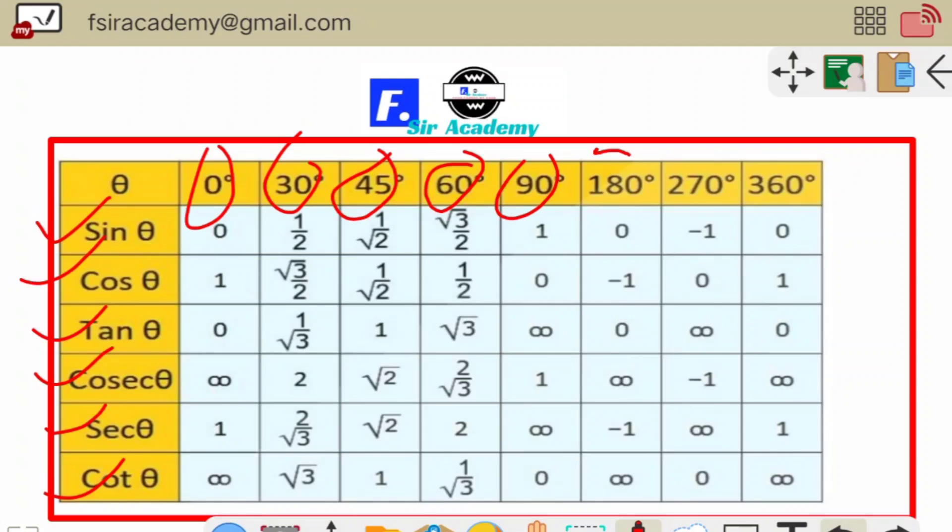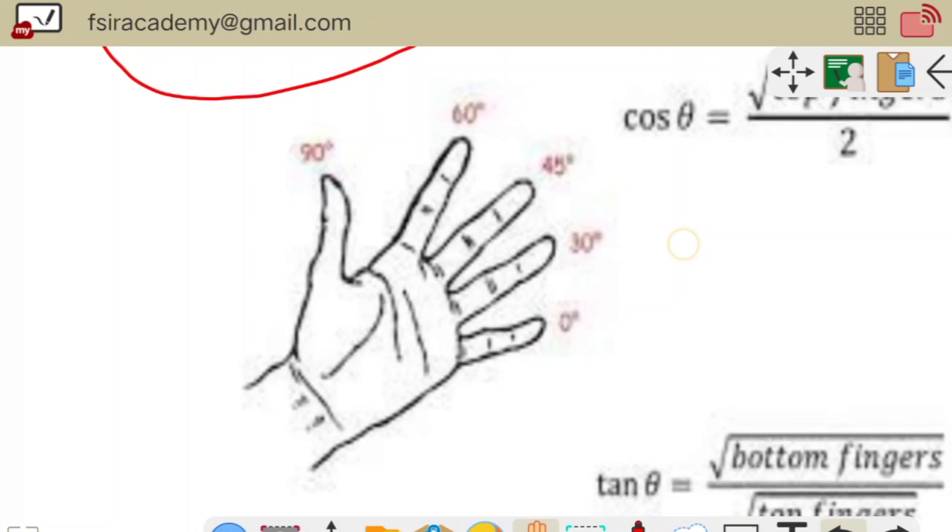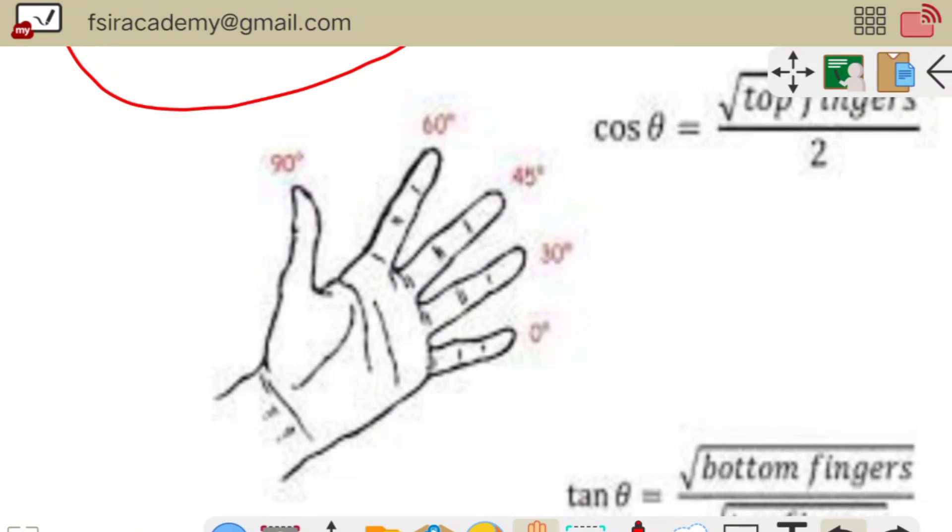This is why I will show you the trick. So let's see the tricks. Before you on the screen, there is a thumb. The smallest finger have written zero degree, and then 30 degree, and then 45 degree, and then 60 degree, and then 90 degree.